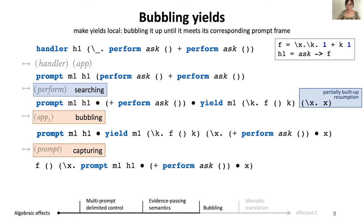Now with evidence-passing semantics, we have made perform local, and with bubbling, we have made yields local. Since everything is local, it opens up a way to implement everything in a monad.